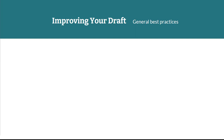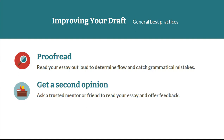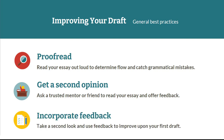Before covering other resources, let's go over a few quick tips for improving your draft once you've finished your first draft. The first is to proofread — a great way to do this is to read your essay out loud to help you determine the flow and catch any grammatical mistakes. The second is to get a second opinion: ask a trusted mentor, such as a teacher or a friend, to read your essay and offer feedback — it's a great way to get an outside perspective. The last one is to incorporate that feedback. Take a second look at your essay after receiving feedback and use any notes given to improve your first draft, keeping in mind that you do not have to include every single recommendation. Ultimately, you want it to be in your voice.